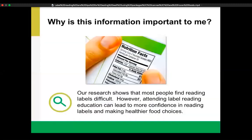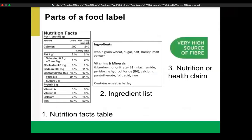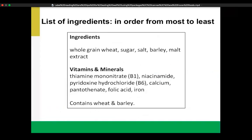So why is this information important for you? Our research shows that most people find reading food labels difficult, but attending label reading sessions such as this one can lead to more confidence and potentially help you make healthier food choices. On packaged foods, you can find nutrition information in three different places. All packaged foods will have a nutrition facts table and an ingredients list. Nutrition or health claims are optional, so you won't always see them on a package.